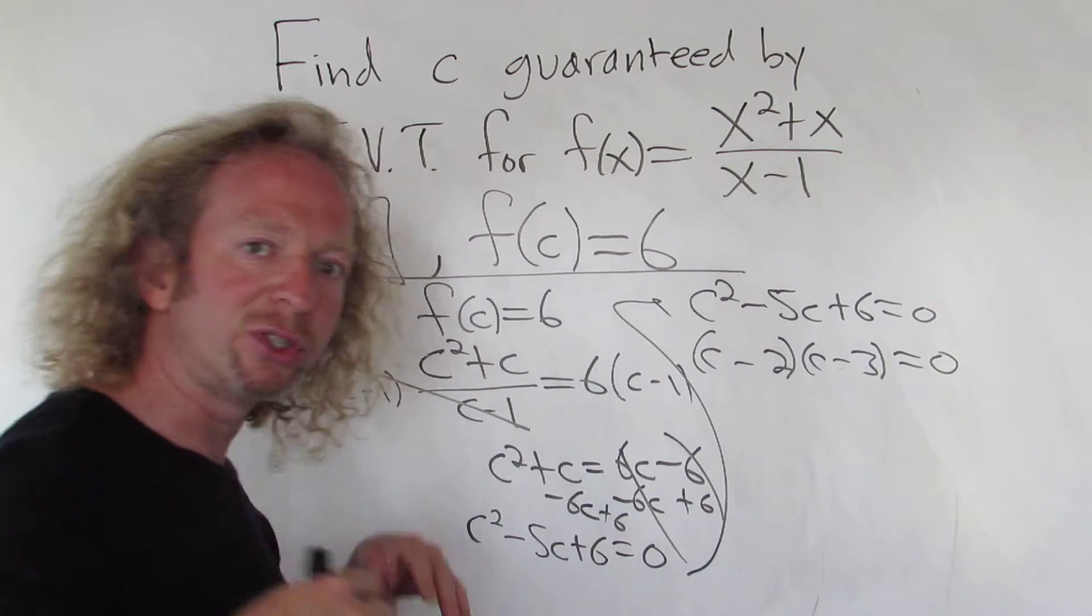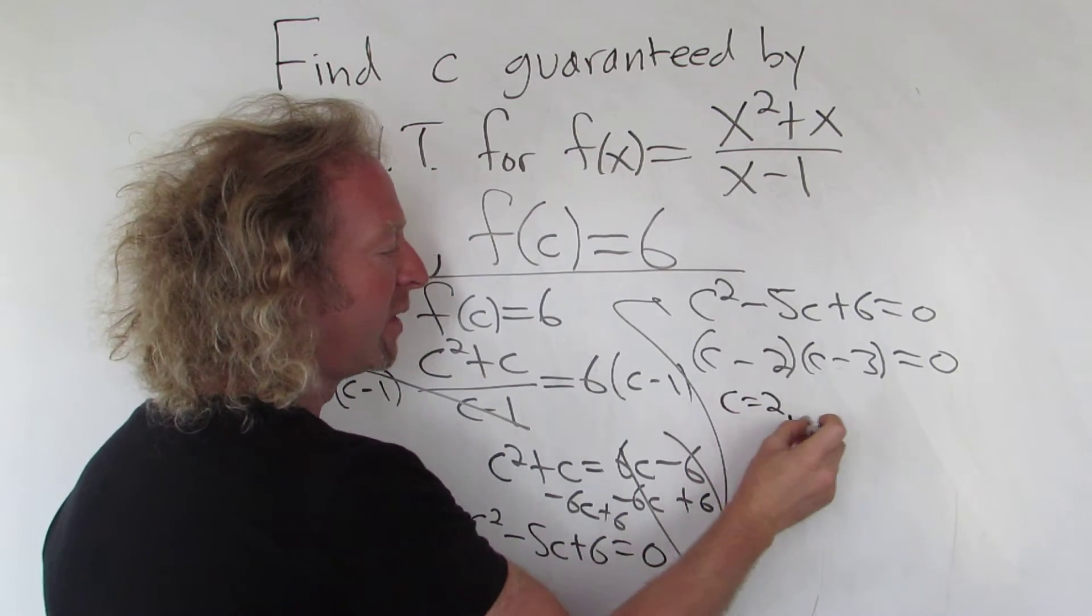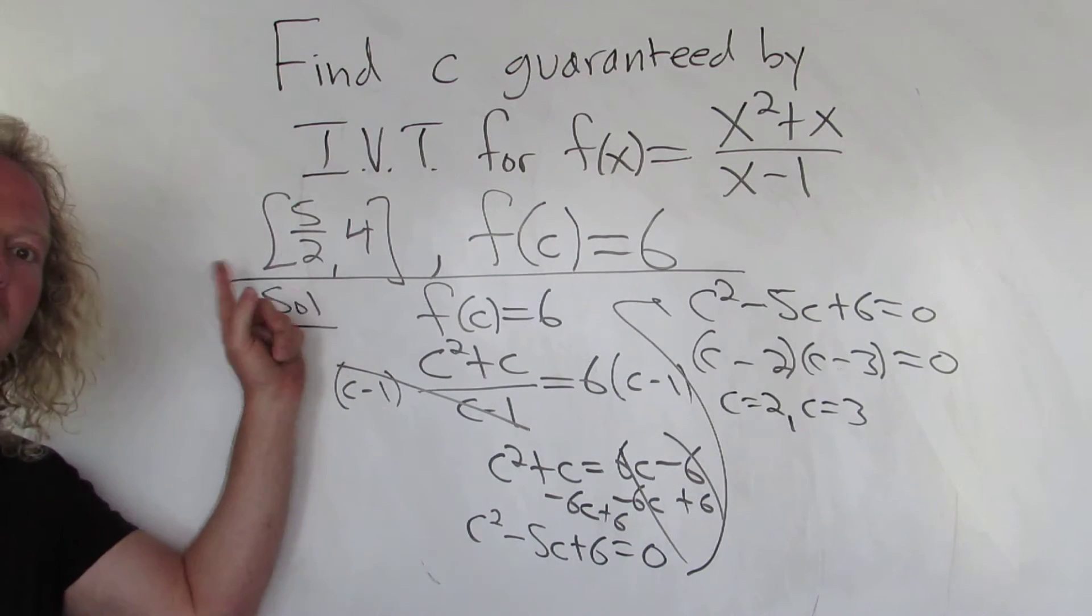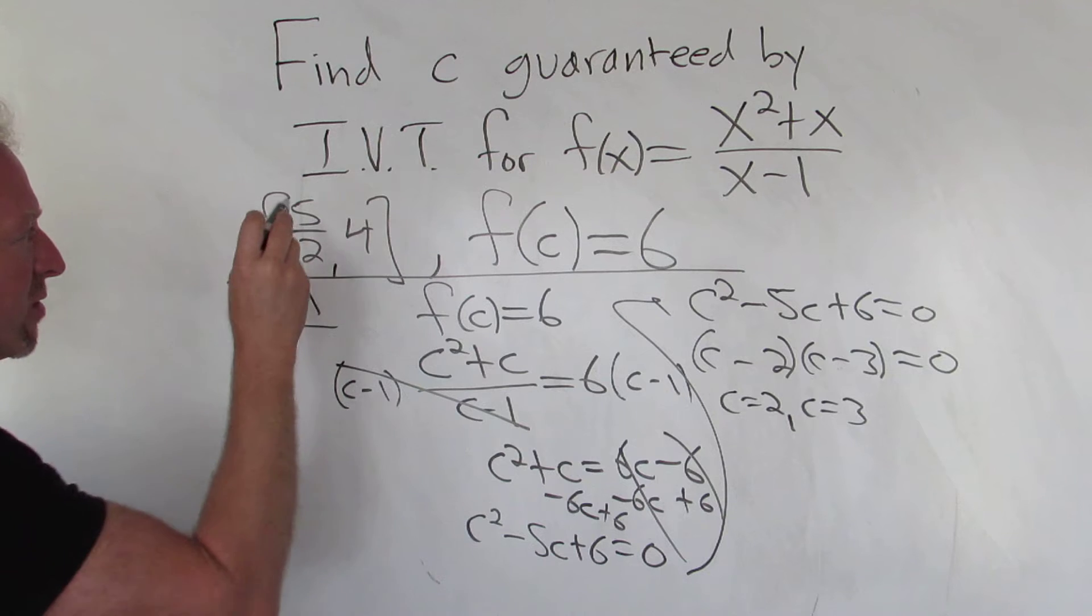From product equal to 0, you set each factor equal to 0. So you get C equals 2 and C equals 3. But one of these does not lie in our interval, right? The answers have to be in the interval.